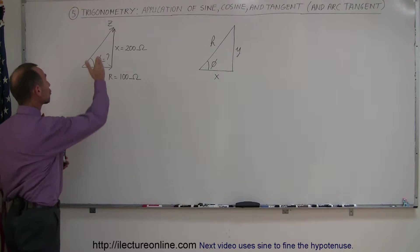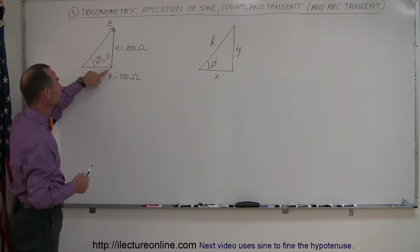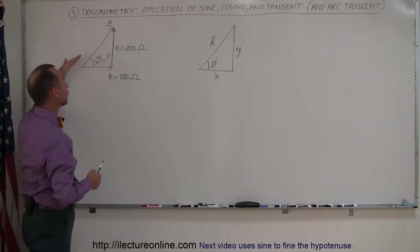Again, what we have here is a triangle. Now, this actually represents something in real life. In physics, for example, we have the resistance, we have what we call the reactants, we have the impedance.